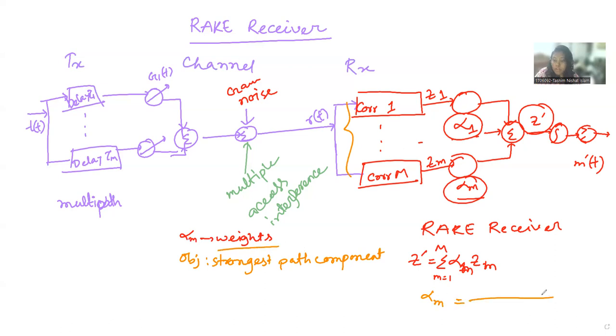So alpha M certainly is the weight. It will be Z M squared. And we sum up all the other components M to M. So what we do, we first get the square for individual, then we get the sum for all the individual components, and we estimate alpha M.